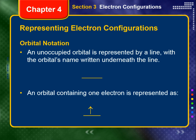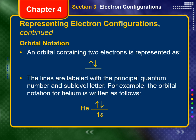In orbital notation, an unoccupied orbital is represented by a line with the orbital's name written underneath that line. An orbital containing one electron is represented by a line with a single arrow above that line, one in each orientation, showing the electrons paired and with opposite spins. The lines are labeled with the principal quantum number and sublevel letter. The orbital notation for helium is written as follows.